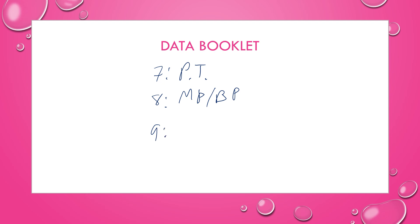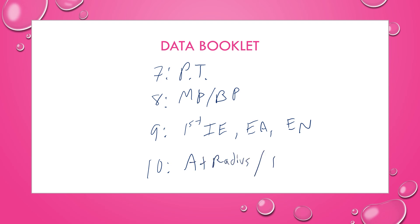Section 9 has first ionization energies, electron affinities, and electronegativities, all in the same periodic table, which is super useful for this section. And then in section 10 of the data booklet, you have another periodic table that lists atomic radius and most common ion radius. Because you have all of this information for so many elements, it's never enough to just know the pattern — you need to be able to explain why those trends exist.